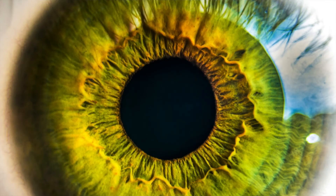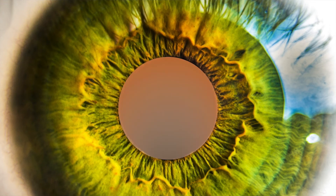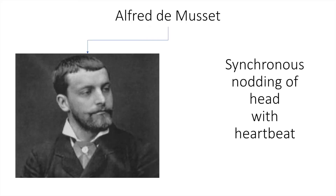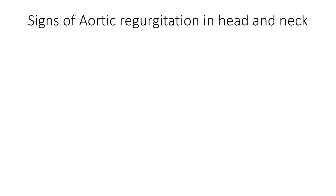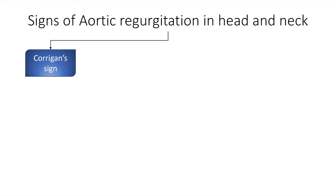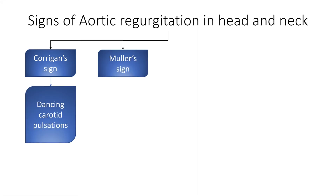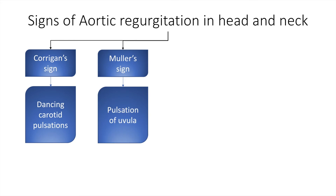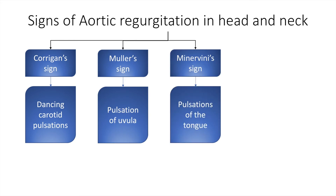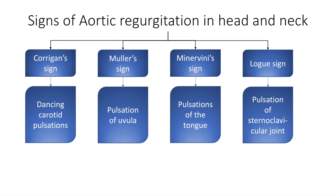Also in aortic regurgitation, there can be alternative dilatation and constriction of the pupil, called Landolfi's sign, and retinal artery pulsations called Becker's sign. Alfred de Musset was a French philosopher who had a habit of synchronous nodding of his head in synchronicity with his heartbeat — this sign is called the de Musset sign. The signs of aortic regurgitation in the head and neck include Corrigan's sign, which is a dancing carotid pulsation; the Muller sign, which is pulsation of the uvula; Minervini's sign, which is pulsation of the tongue; and Logue sign, which is pulsation of the sternoclavicular joint.